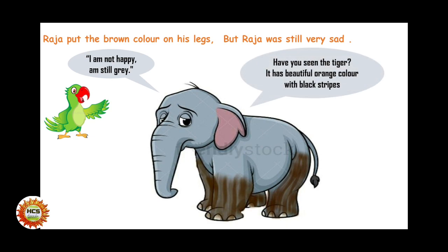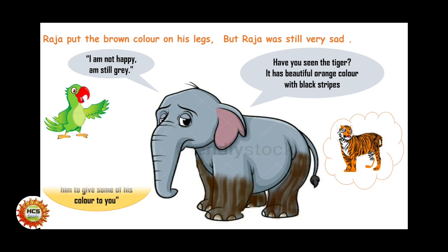Have you seen the tiger? It has a beautiful orange color with black stripes. So the parrot replied, don't be sad — the tiger is my friend. I will ask him to give some of his color to you.